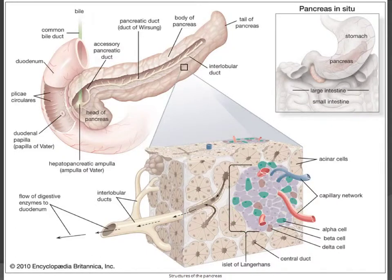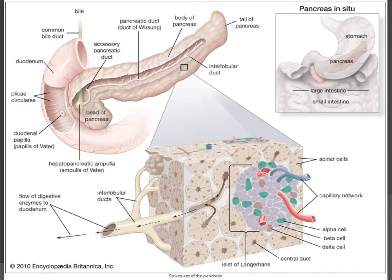This is called the islet of Langerhans, and within this islet of Langerhans there are three different types of cells — alpha, beta, and delta cells. Delta cells secrete a type of hormone that we're not very interested in at the moment, so you can subsequently forget about delta cells. We are going to focus on the function of alpha cells and beta cells.